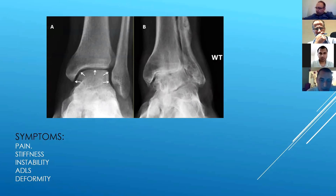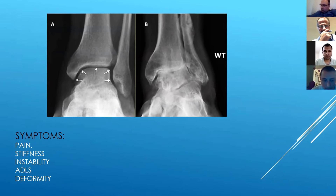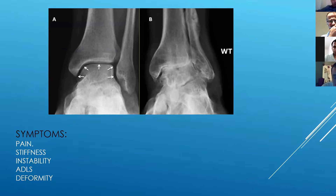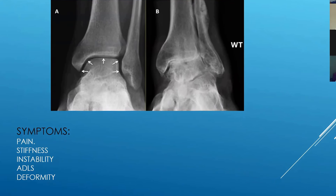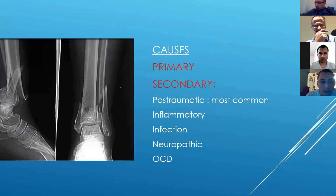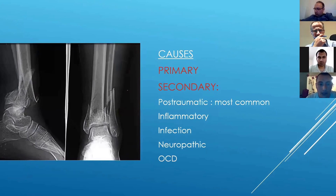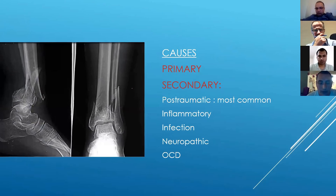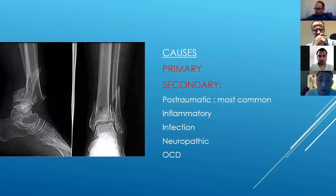You need to ask about activities of daily living — whether it affects the patient's job or work. Deformities can be either fixed or flexible, and we'll discuss that later. Now the most important thing is understanding the causes of ankle arthritis.